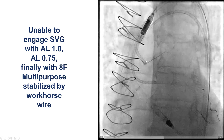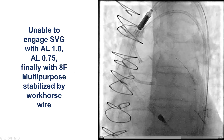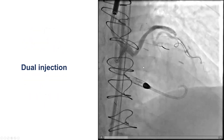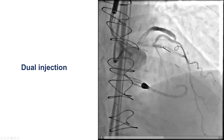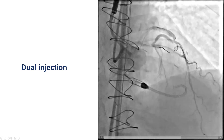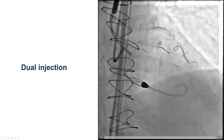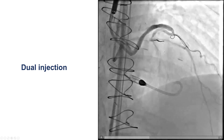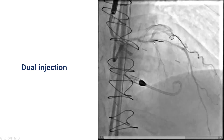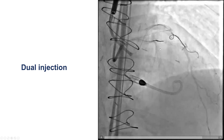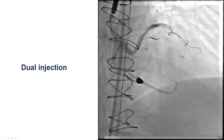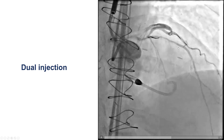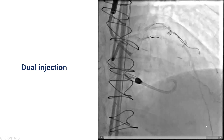Engagement of the SVG to diagonal was challenging but was eventually achieved with a multipurpose guide. This is a dual injection. There is a saphenous vein graft to the diagonal that then fills the LAD, which seems to have a significant lesion at the mid-segment, which is likely the patient's culprit for angina given that the LAD is a very large vessel.